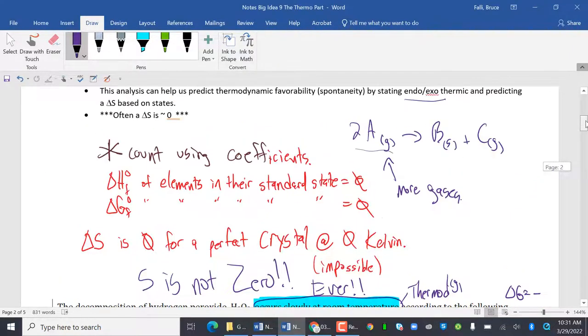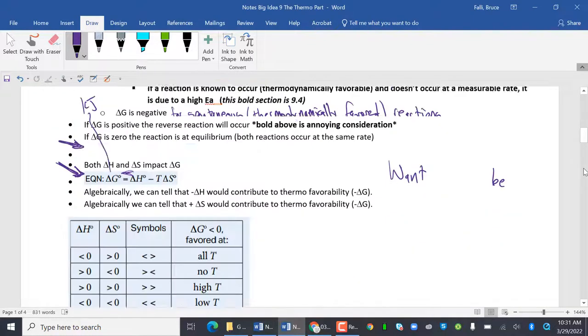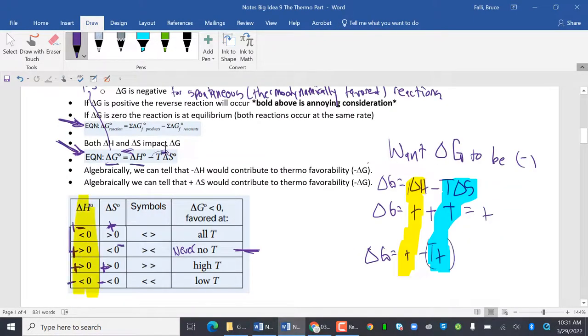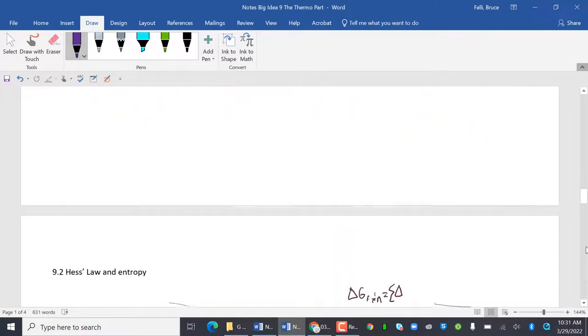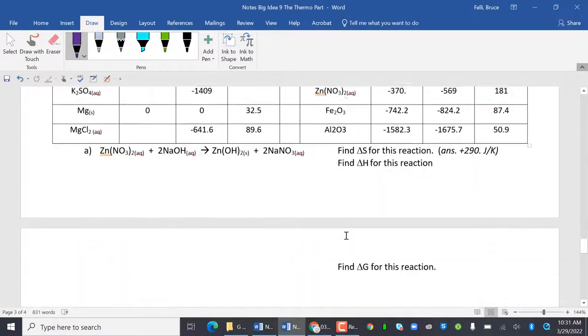We showed how it could be delta G equals delta H minus T delta S. And then we've got products minus reactants for the other one. So I'm going to do a couple of these, and I think that's about it. So we've got this big table of everything, and it's in your notes too. I hope you printed it out.